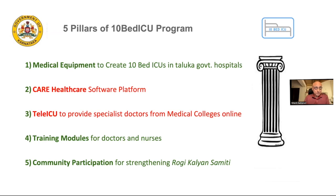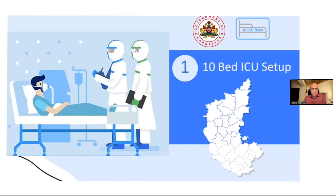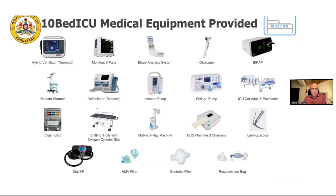The first pillar is about creating the ICU itself — a 10-bed ICU. We basically provide about 50 lakhs worth of ICU equipment to create critical care infrastructure in a small government hospital where the poor go when they have very serious conditions, whether it's COVID, cardiology, oncology, or surgical aftermath. These ventilators, five paramonitors — all of this equipment is state-of-the-art.